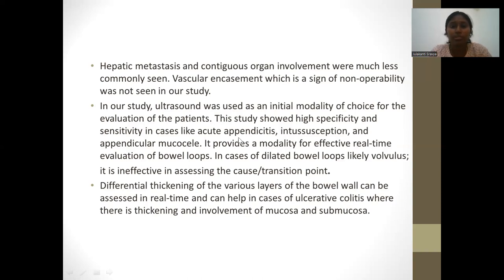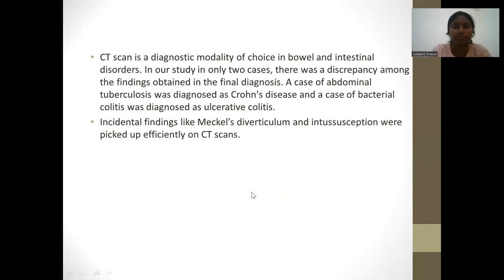In cases of dilated bowel loops such as volvulus, ultrasound is ineffective in assessing the course and transition point. Differential thickening of the various layers of the bowel wall can be assessed in real-time, which is helpful in cases of ulcerative colitis involving the mucosa and submucosa. CT scan is the diagnostic modality of choice for bowel and intestinal disorders. In only two cases were there discrepancies between imaging findings and final diagnosis: a case of abdominal TB was diagnosed as Crohn's, and a case of bacterial colitis was diagnosed as ulcerative colitis. Incidental findings like Meckel's diverticulum and intussusception were picked up efficiently on CT scans.